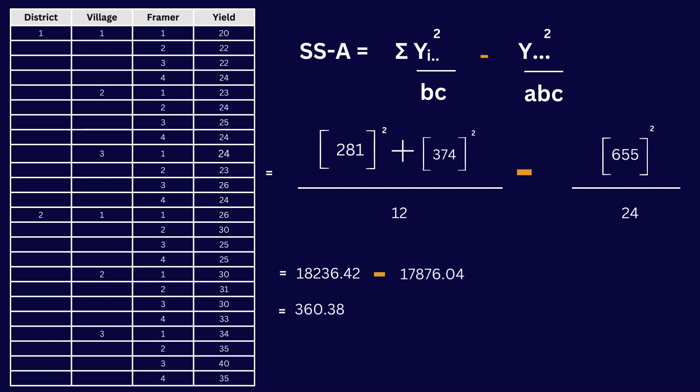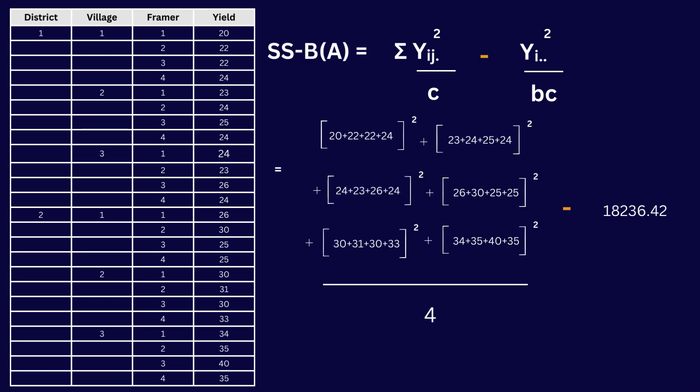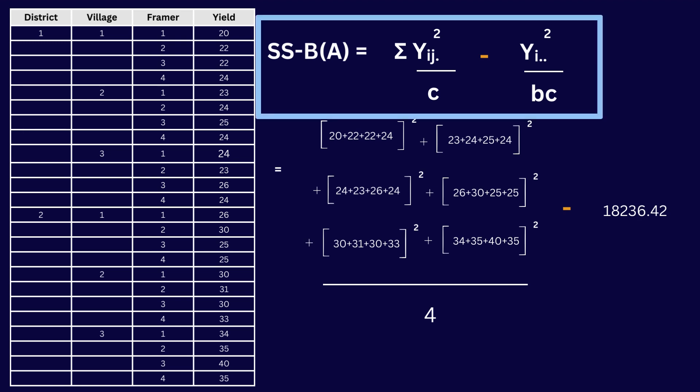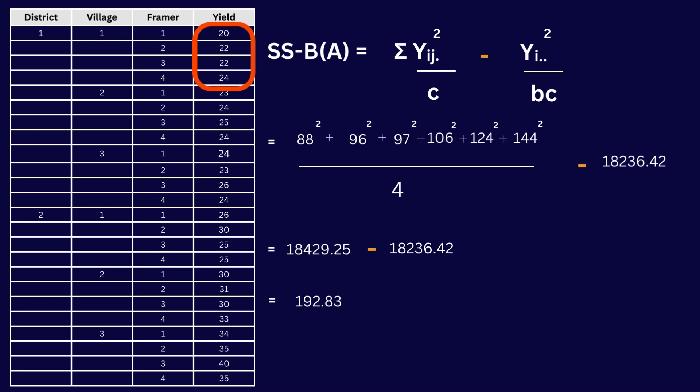Now let's find the sum of squares of BA. Using the formula, we already know that yi double dot squared divided by bc equals 18,236.42. We need to find the summation of yij dot squared divided by c, where yij dot is the sum of all yield values in a village. Here, 88 is the sum for village 1 district 1, 96 for village 2 district 1, and 97 for village 3 district 1.